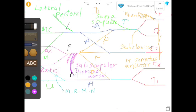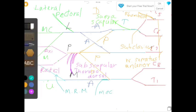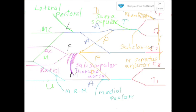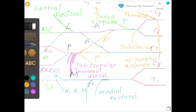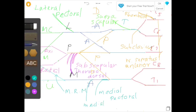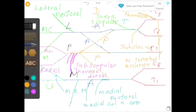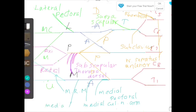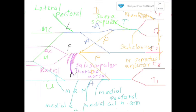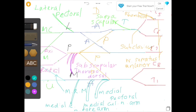There are five branches arising from the medial cord. The medial root of the median nerve combines with the lateral root to form the median nerve. The medial pectoral nerve supplies the pectoralis minor and then pierces it to supply the lower fibers of the pectoralis major muscle. The medial cutaneous nerve of the arm is the smallest branch of the brachial plexus. The medial cutaneous nerve of the forearm is much larger than the medial cutaneous nerve of the arm. The last branch arising from the medial cord is the ulnar nerve, which is the direct continuation of the medial cord with additional C7 fibers.